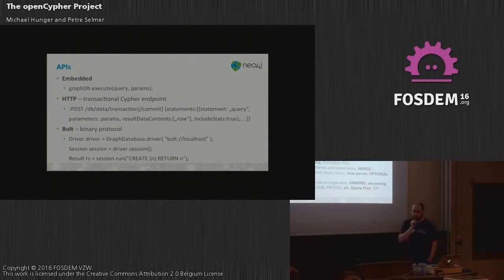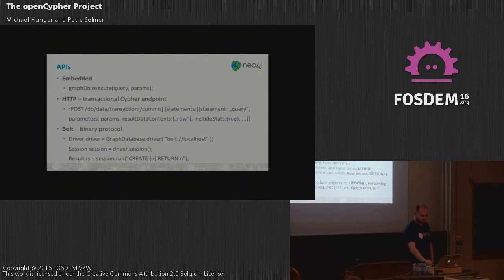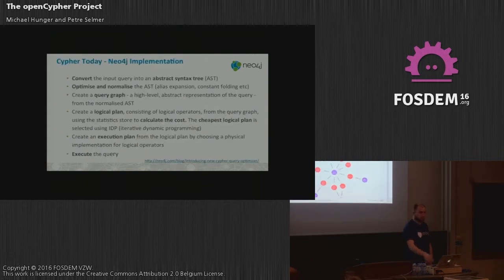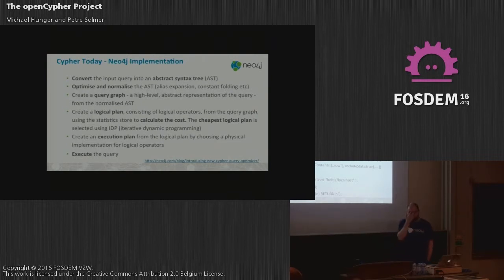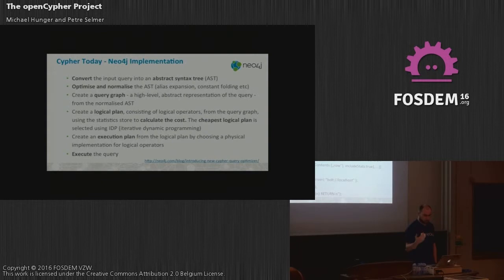In 2.3 we added text index support — the starts-with functionality. It's pretty easy to try: just get Neo4j and you can use it via an embedded Java API or over HTTP. In the future we also have a binary protocol. Drivers exist across all languages — PHP, Java, JavaScript, C, C++, and more — and it's more efficient as well.